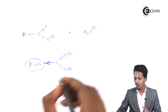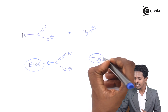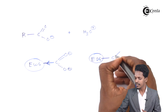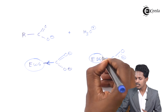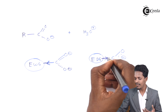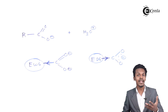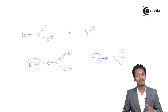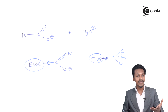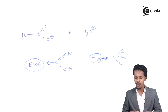Meanwhile, if an electron donating group is attached to the carboxyl group, it will actually destabilize the carboxylate ion, and thereby the H⁺ ion will not be removed very easily. So if an electron withdrawing group like chlorine or fluorine is attached to the carboxyl group, then that acid would be very much stronger.